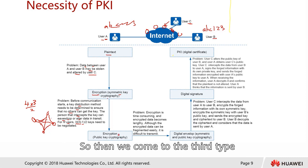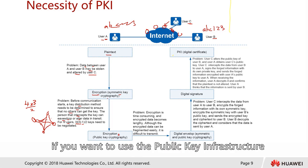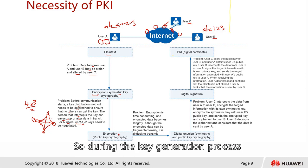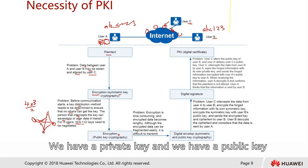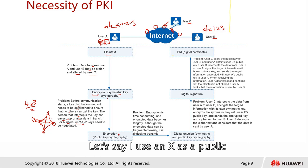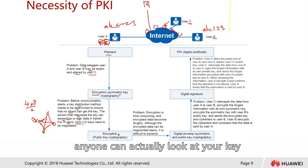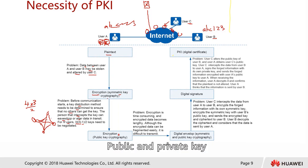So we come to the third type: encryption using public key cryptography. Every user who wants to use the public key infrastructure — the PKI — must go through a key generation process. During key generation, you come up with a pair of keys: a private key and a public key. The public key, for example X, can be shared with anyone. The private key is something you must keep and never expose.